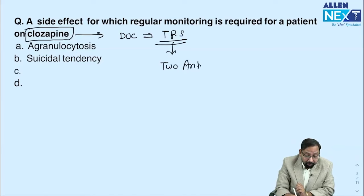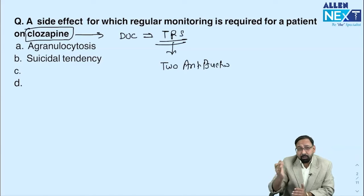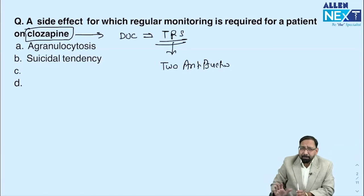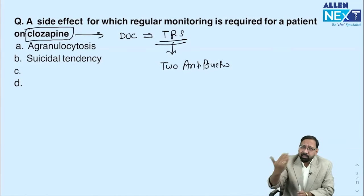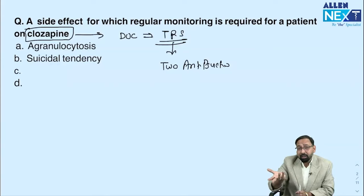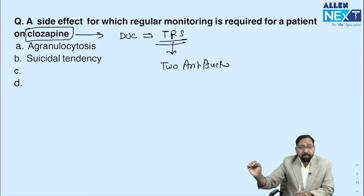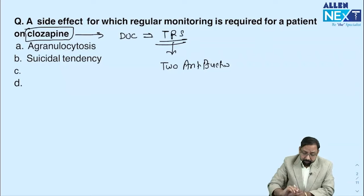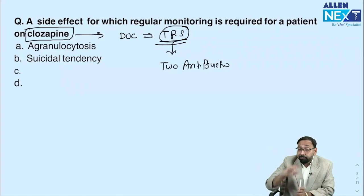When we say treatment-resistant schizophrenia, it means two antipsychotics have been tried. For example, if a patient came with typical symptoms of schizophrenia, I started olanzapine — no improvement for four to six weeks — then I changed to haloperidol for another four to six weeks — still no improvement. That is treatment-resistant schizophrenia, and we start clozapine. We keep clozapine for last because it has many serious side effects.